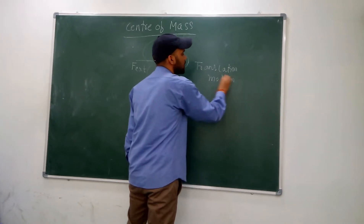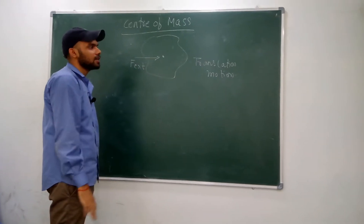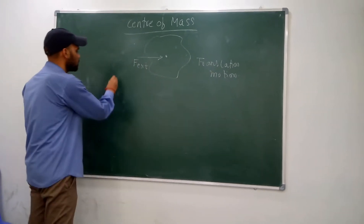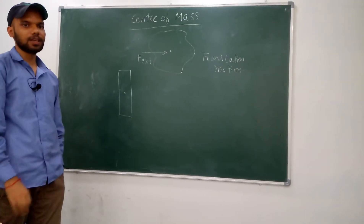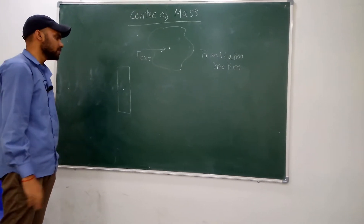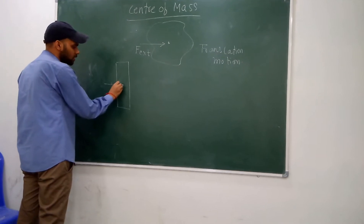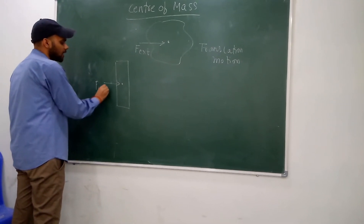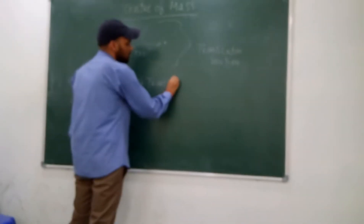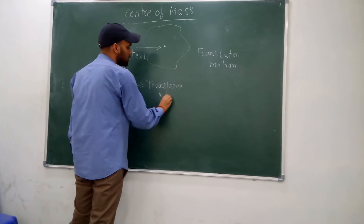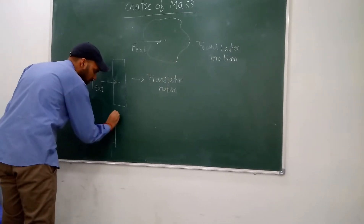If a force is applied at the center of mass, the body will exhibit translational motion. If a force is applied other than at the center of mass, then that body will exhibit rotational motion. Suppose we have a uniform mass density body — the center of mass is at the center of the box. If a force is applied other than at the center of mass, that body will exhibit rotational motion.